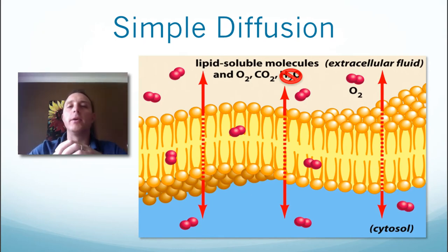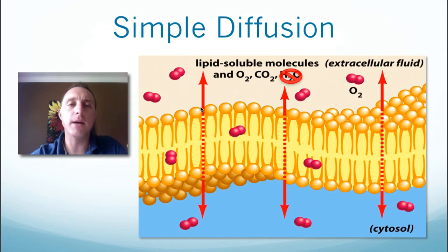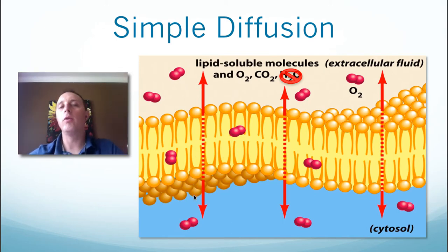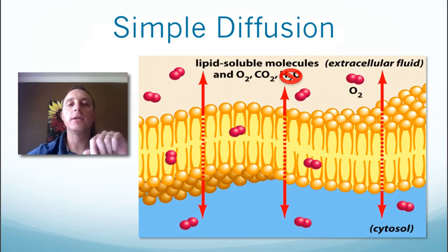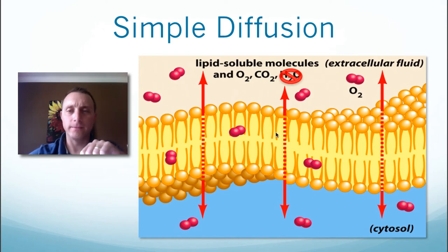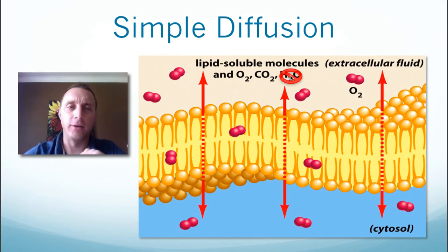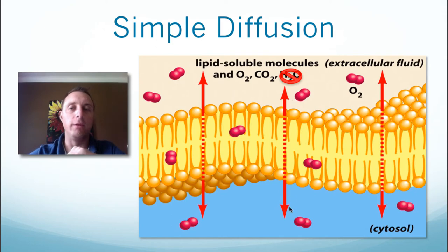The first type of passive transport is simple diffusion. This occurs when molecules are able to move right in between the molecules of the cellular membrane — between the phospholipids. Lipid-soluble molecules, some fat-soluble vitamins like vitamins A and D, and some very small molecules such as dissolved gases like oxygen and carbon dioxide can move this way. Water does not move through the membrane by simple diffusion — it is about the most lipid-insoluble molecule around.